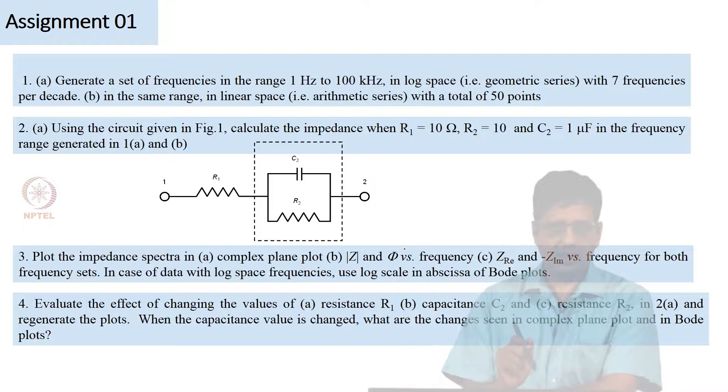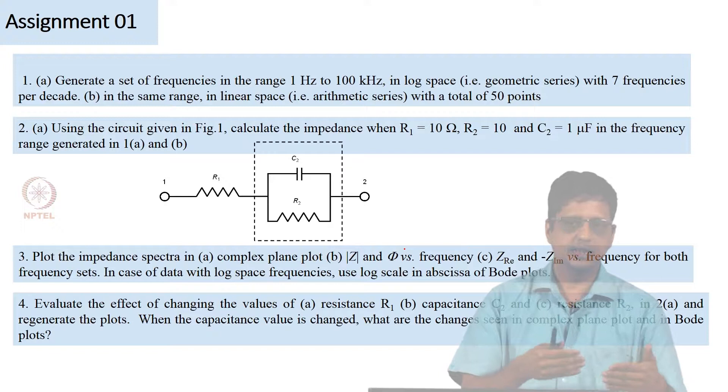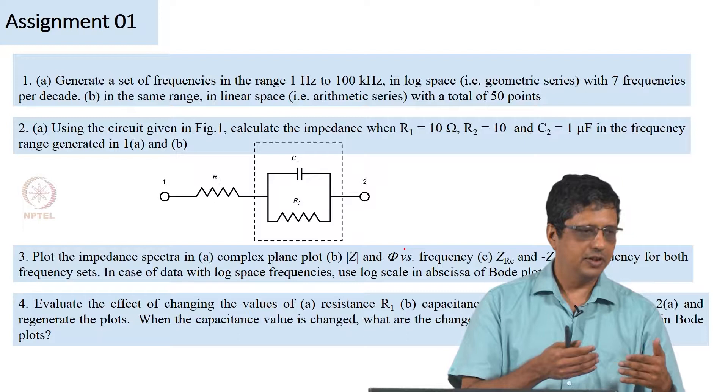What happens when you change the R2? The idea is this: if you know that whenever the resistance R2 is changed, in Bode plot it will appear like this, in complex plane plot it will appear like this, then when you actually do experiment, you might do it in one solution, the same electrode, you might change the solution composition, you might add a chemical or you might change the electrode surface and then redo the experiment. And when you compare, if you see certain change in the result, you should be able to think and say this most likely means that this resistance has changed or this capacitance has changed. It will help you get an understanding of the physical phenomena if you have this knowledge.